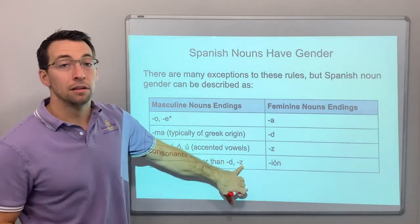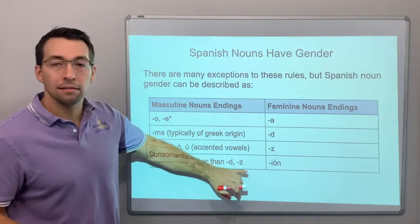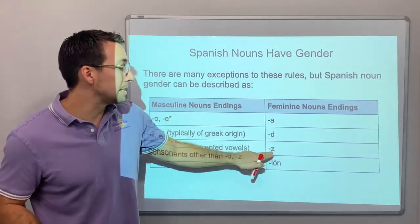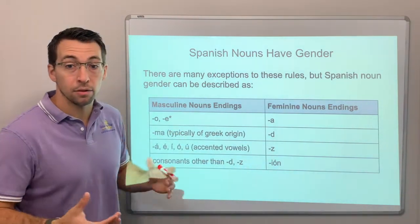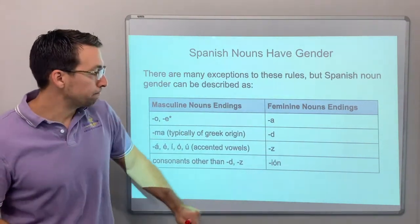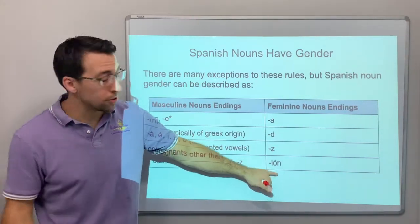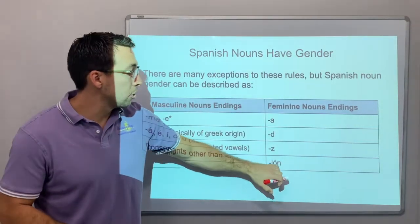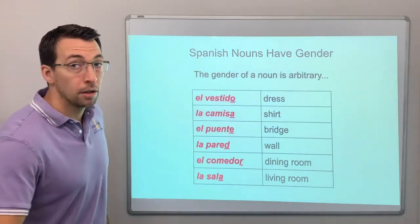Accented vowels are always masculine. Consonants other than -d and -z are masculine. If a noun ends in -d or -z, it's feminine — for example, 'la paz' (peace). Nouns ending in -ión, like 'la vacación' or 'la televisión,' are feminine — that -ión ending is always feminine.